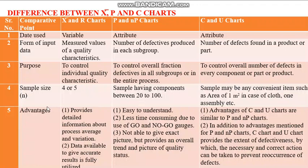For sample size: X-bar charts require actual measurements with measuring instruments, which is time-consuming, so the sample size is normally small — four or five samples. For P and NP charts, sample sizes may range between 20 to 100. For C and U charts, since they deal with defects, you select a convenient area — like one square meter of cloth or one assembly.